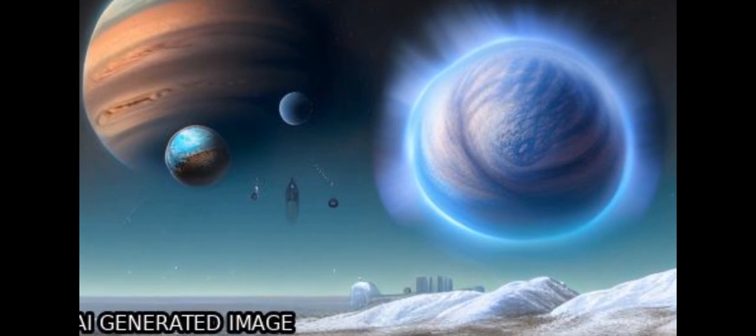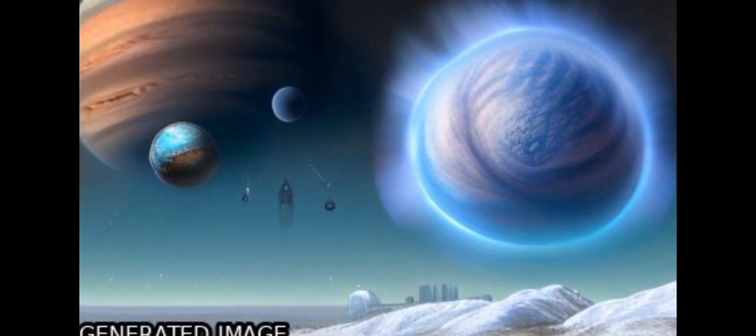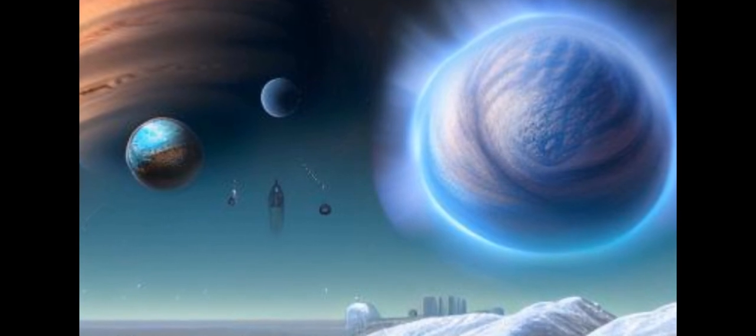All three planets have mass estimates ranging between 0.6 and 2.4 Jupiter masses, suggesting they are all likely to be gas giants.